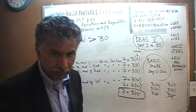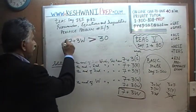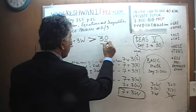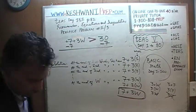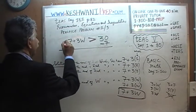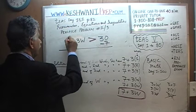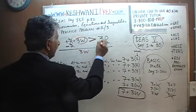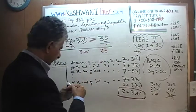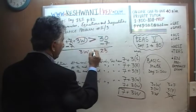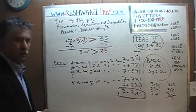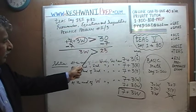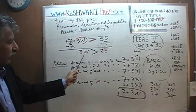The book doesn't ask us to solve for W, but we're going to solve for it anyway just for learning purposes. We have a positive 7 here — we want to get rid of it. Let's subtract 7 from both sides. The positive 7 and negative 7 cancel each other out. 3W comes down, and 30 minus 7 is 23. So now we have 3W > 23.